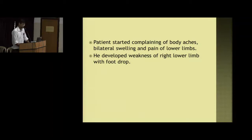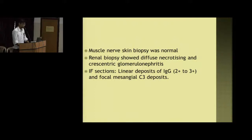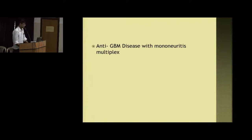In the ward, the patient started complaining of body aches and increased pain in the lower limbs and developed a foot drop in the right lower limb. A muscle, nerve, and skin biopsy was done — results were normal. Renal biopsy showed diffuse necrotizing and crescentic glomerulonephritis. Immunofluorescence sections showed linear deposition of 2+, 2+, 3+ IgG with focal mesangial C3 deposits.